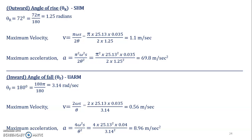For the angle of descent using UARM, theta_f is 180 degrees = 3.14 radians. Maximum velocity for UARM = 2ωS / θ — substitute and get the answer, which is 0.56 m/s. Please verify these calculations and check the formulas from the chart provided. Then calculate maximum acceleration accordingly.